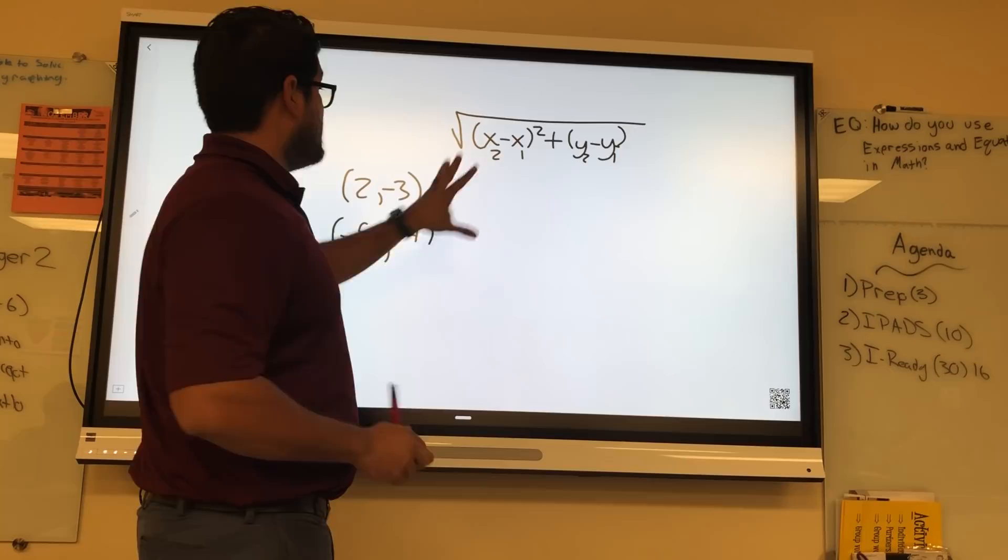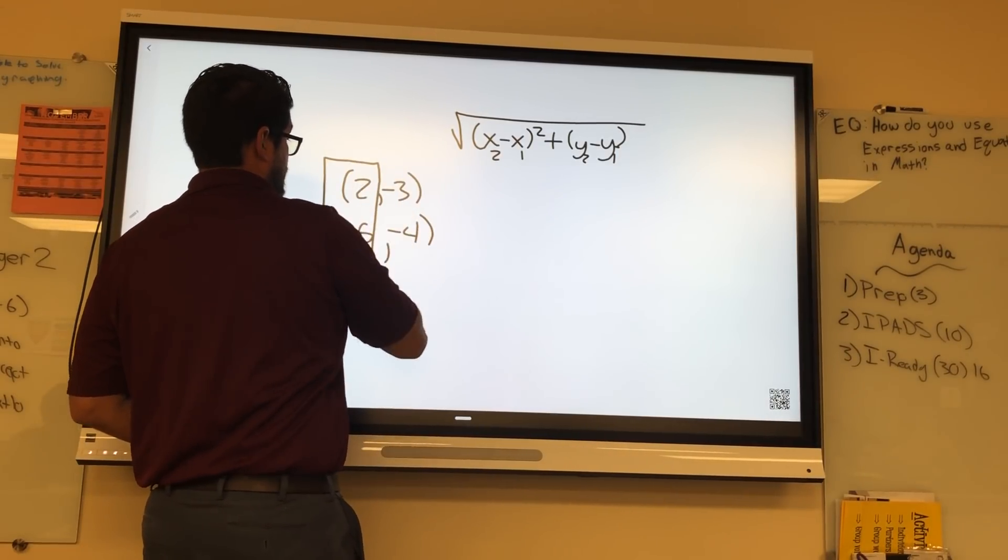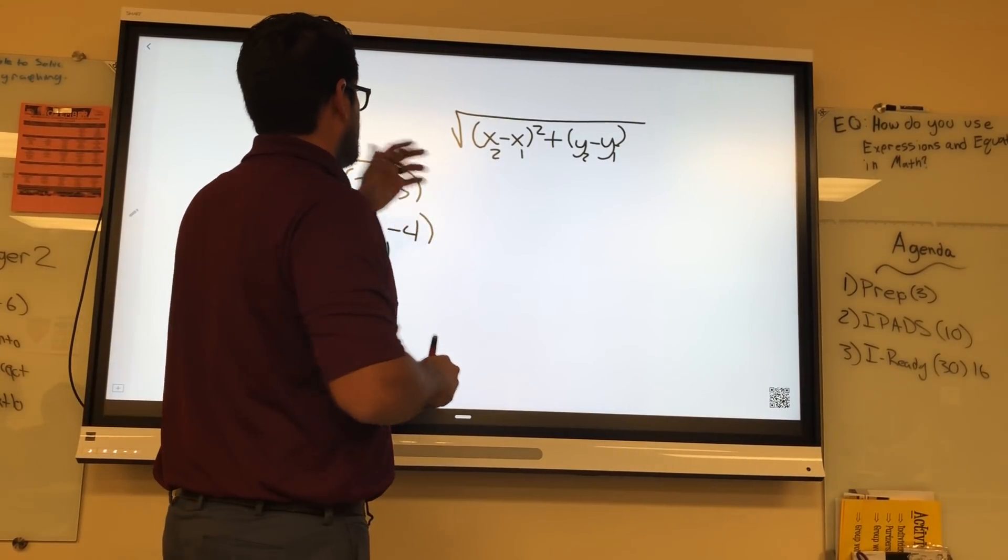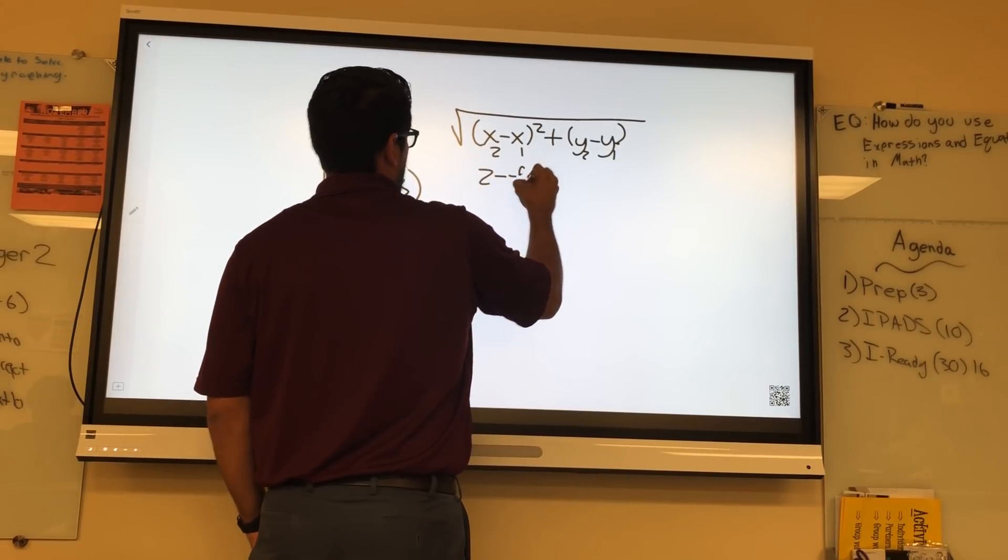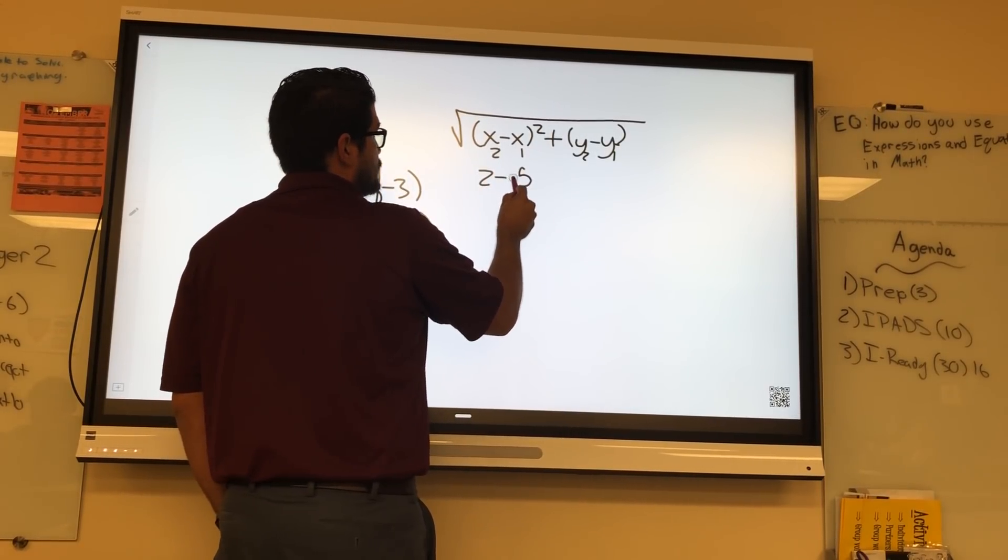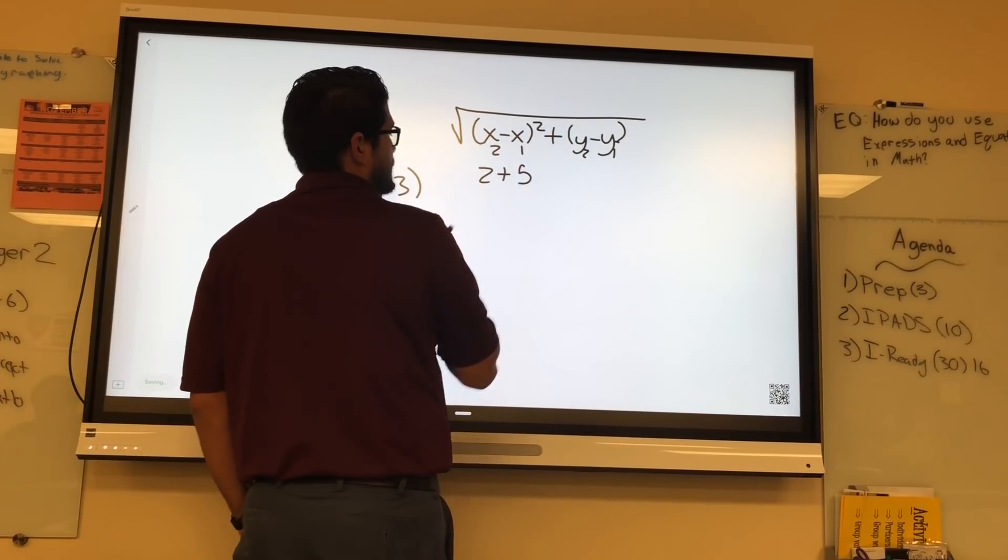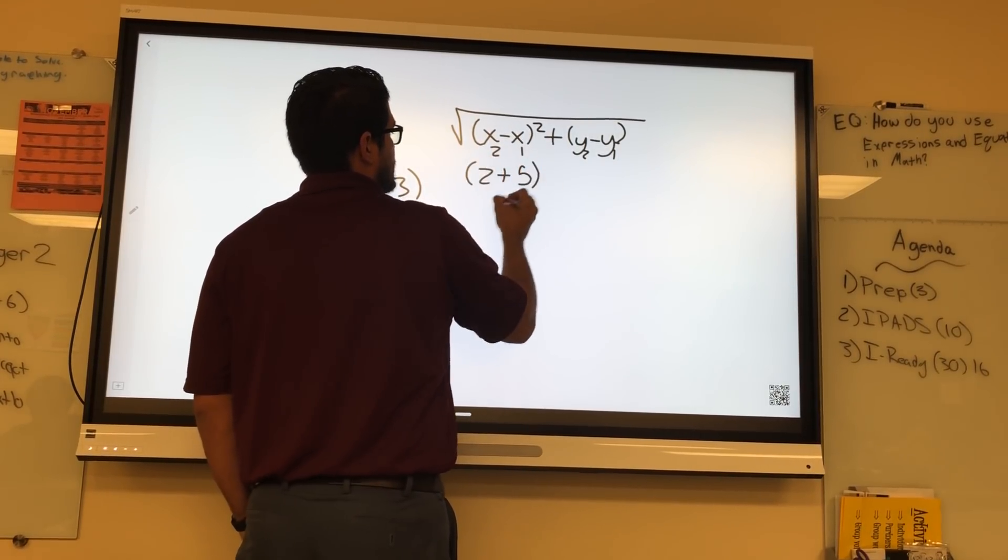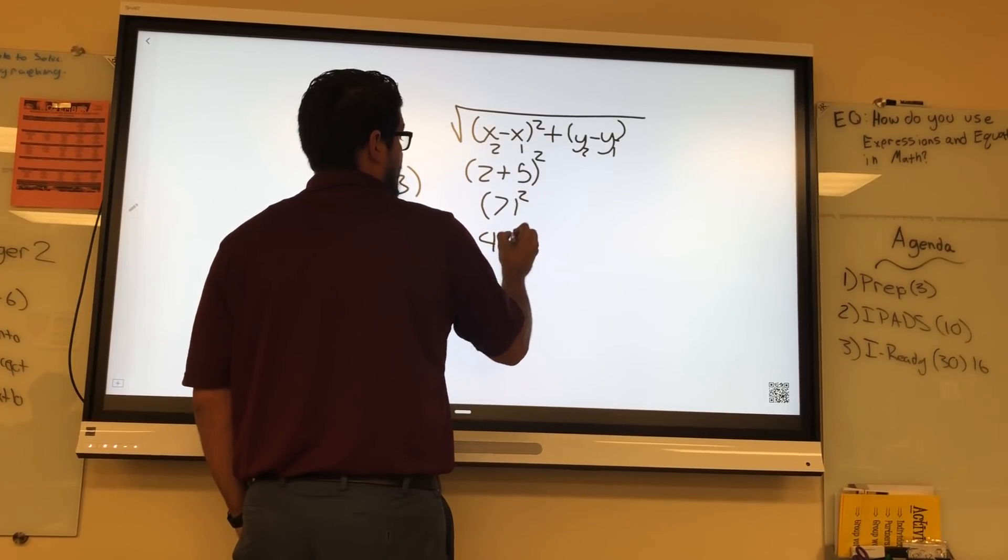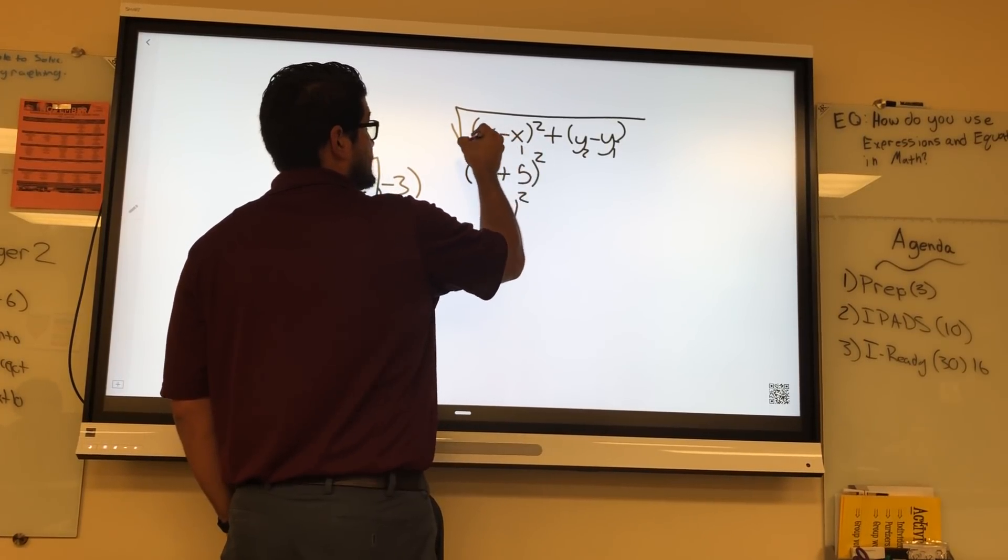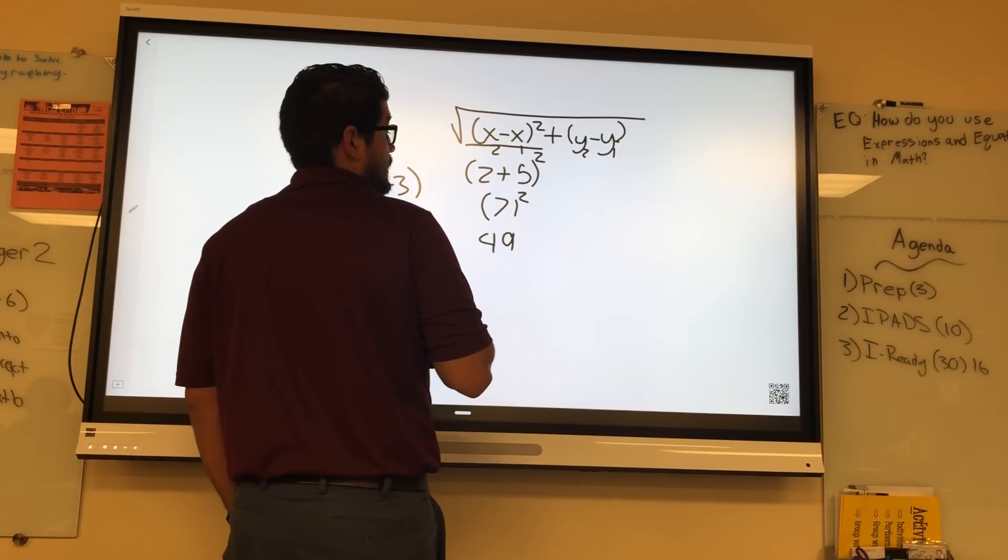So we're going to subtract the X's, which are these two numbers. These two numbers are the X's, so we're going to subtract them. We're going to write 2 minus negative 5. Now 2 minus negative 5 turns into 2 plus 5, which gives us 7. Don't forget that we still have to square it, which gives us 49. What we have completed is this part of the equation.